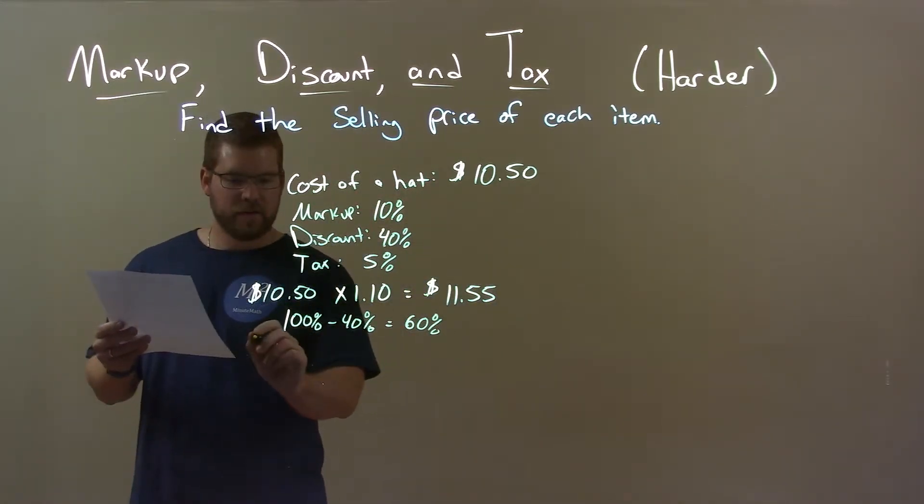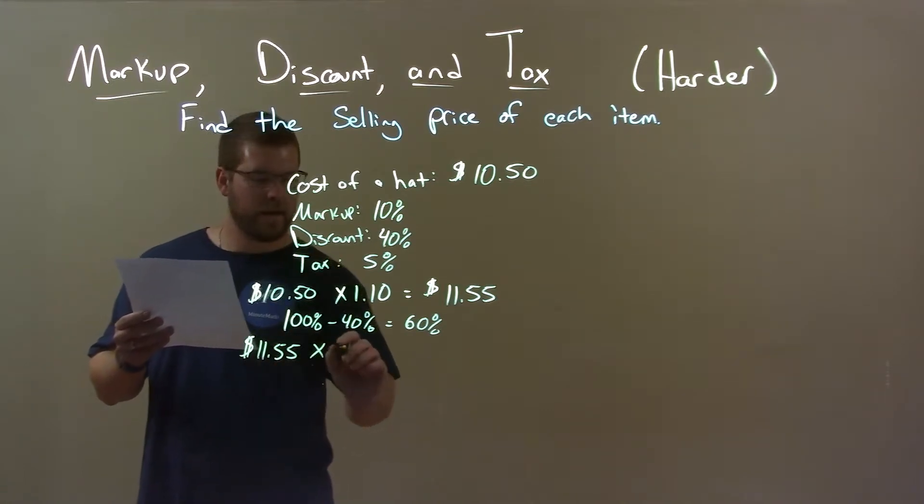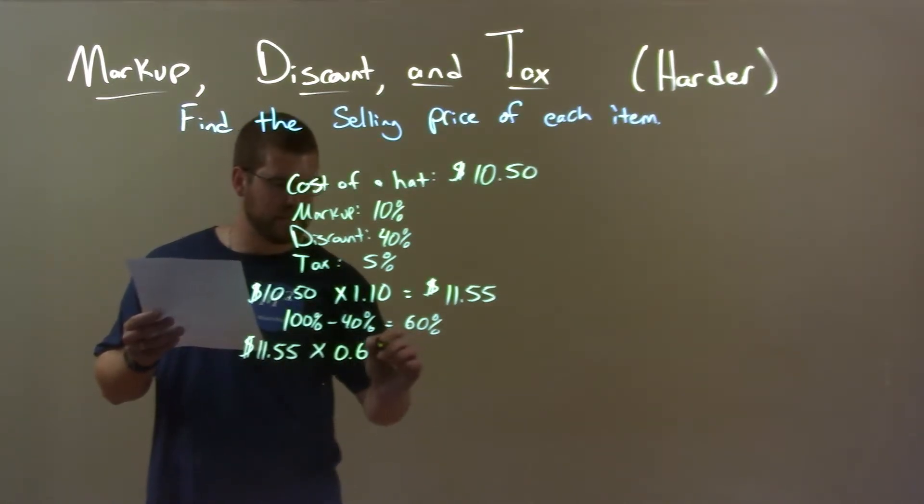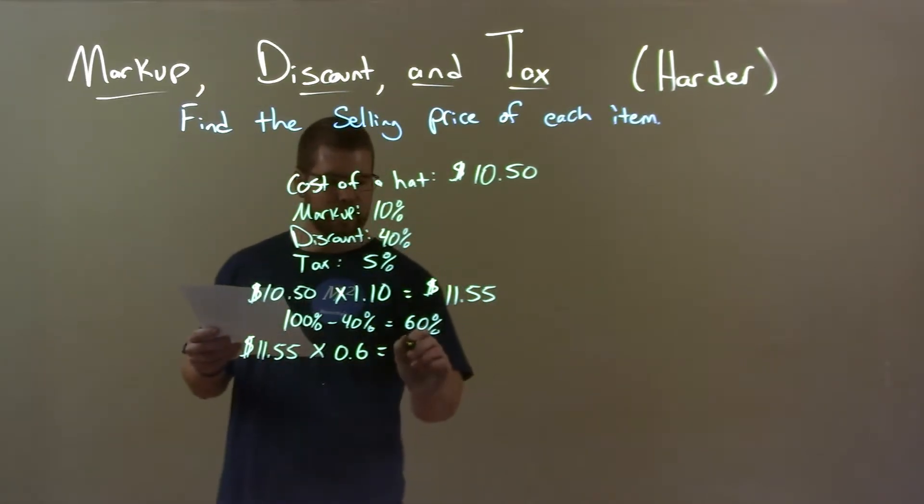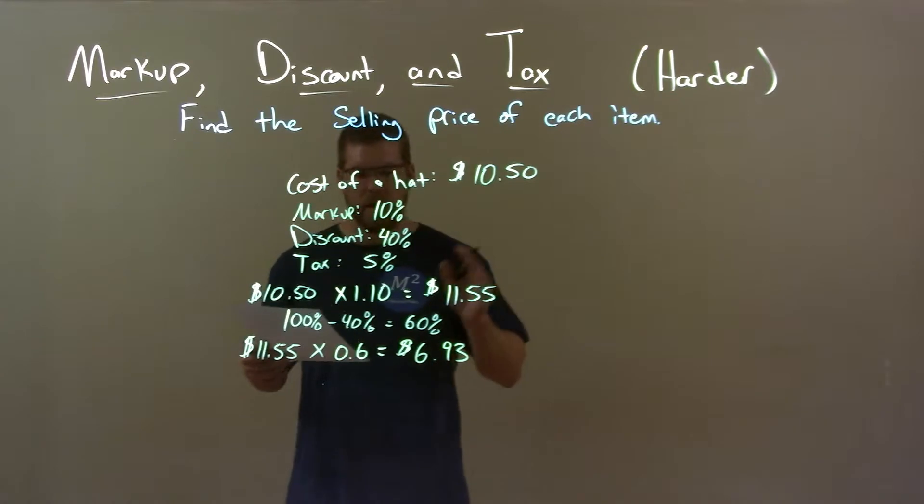So that $11.55, we have to multiply that by 0.6, 60% as a decimal. This comes out to be $6.93.